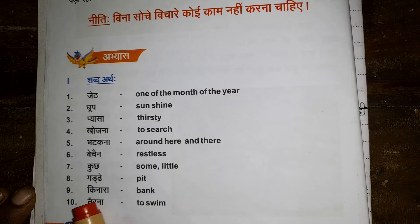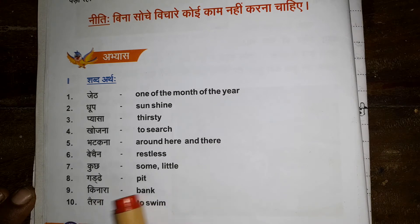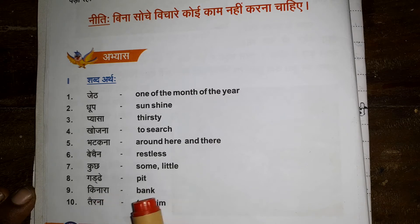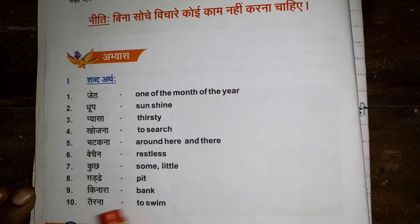Next: Kinara. What is the word? Kinara. It means bank. Ki, Na, Ra — Kinara — bank. Next: Tairna. What is the word? Tairna means to swim. Tairna — to swim. I think we are clear on this.